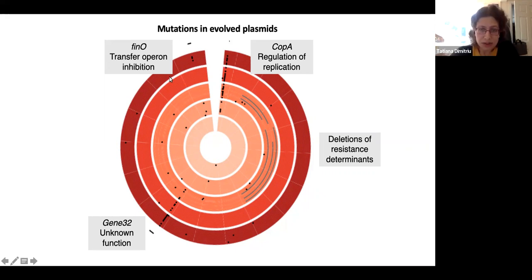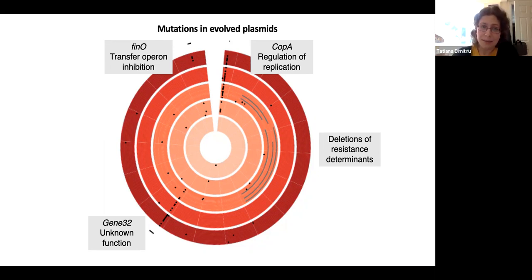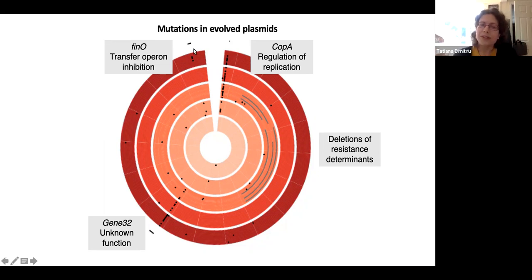We saw various point mutations, and I'll focus on two. The mutations in FinO are what we basically expected to find: FinO is the major repressor of the transfer operon expression in IncF plasmids. Those plasmids are usually repressed, and in the lab we often use derepressed mutants, which have very high transfer rates and are usually mutated in FinO. But we only had five clones with this, and they also didn't have strongly increased transfer rates, so they didn't explain much of our data.